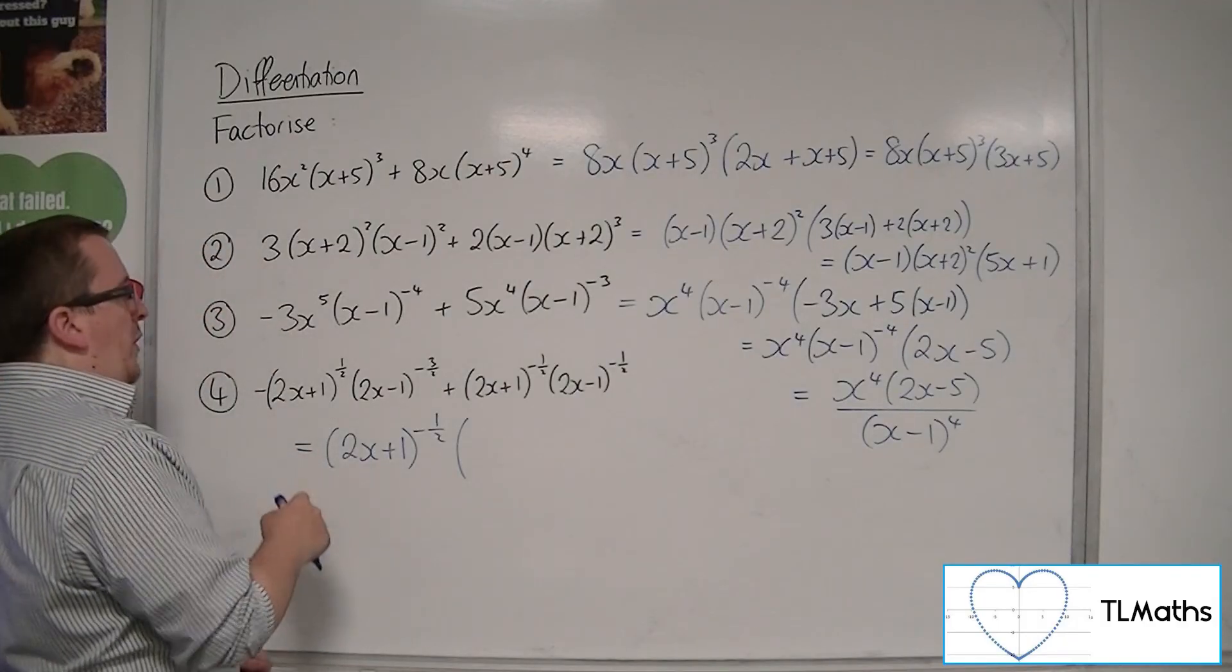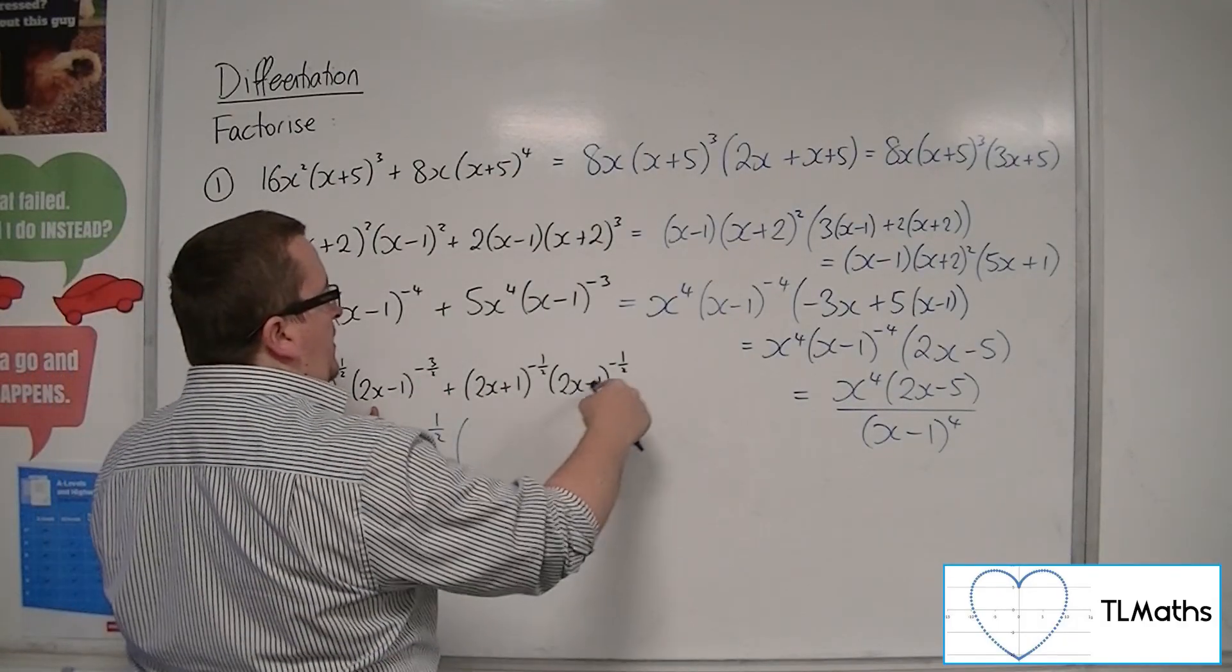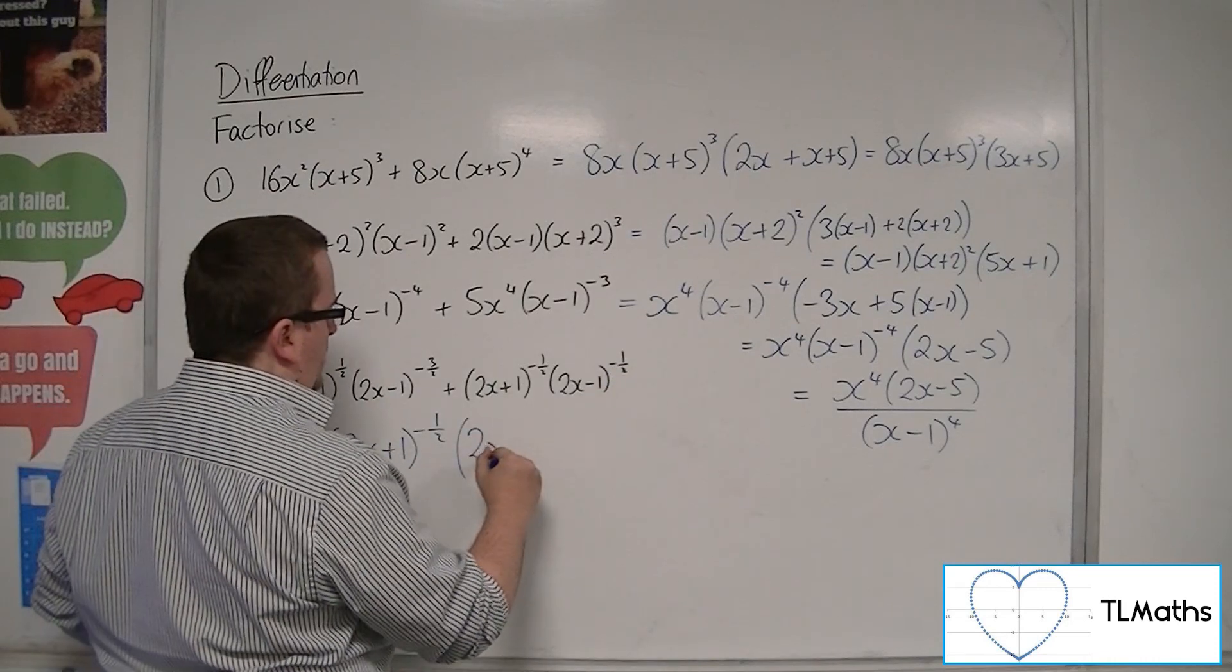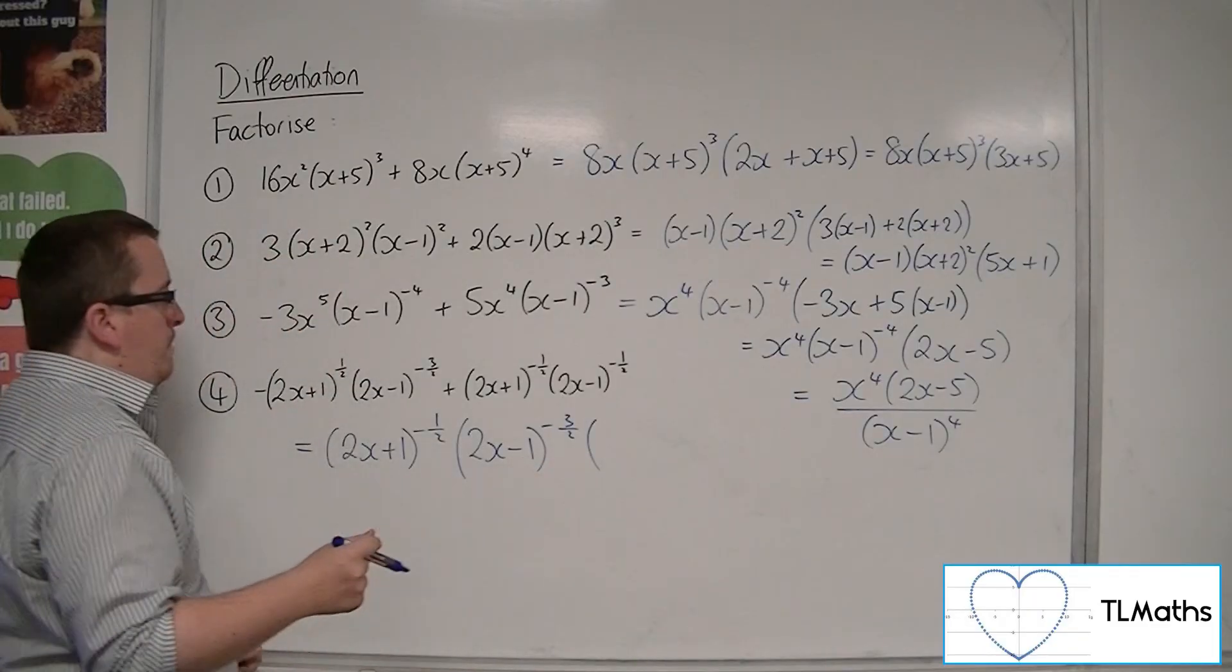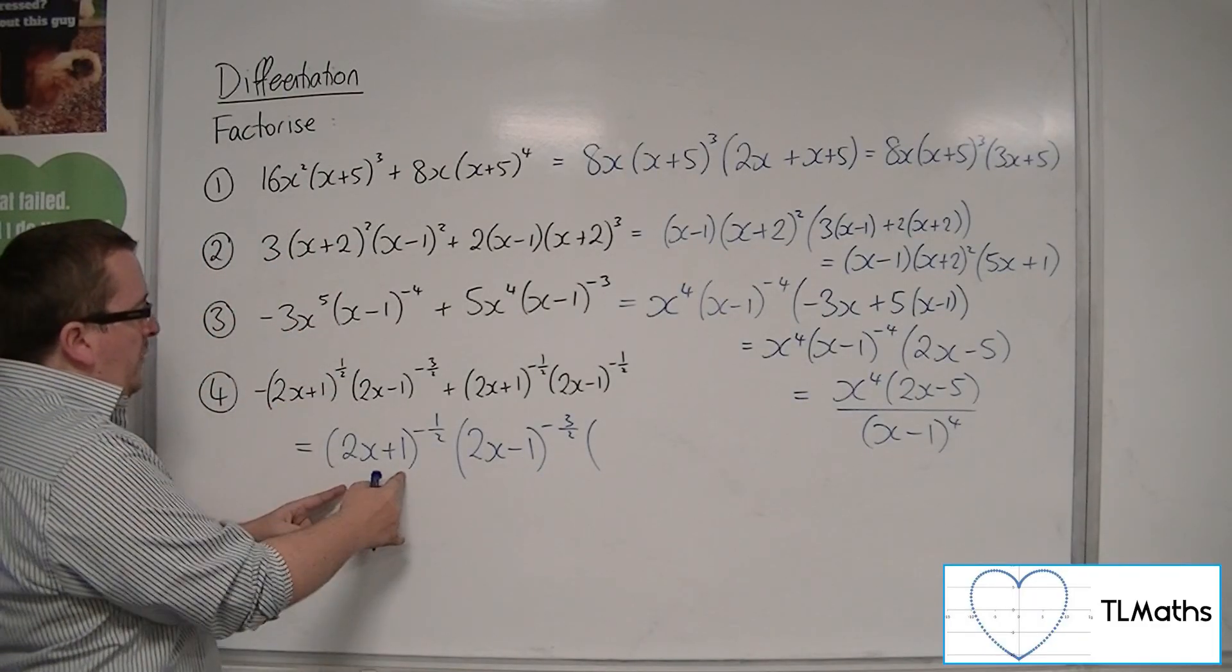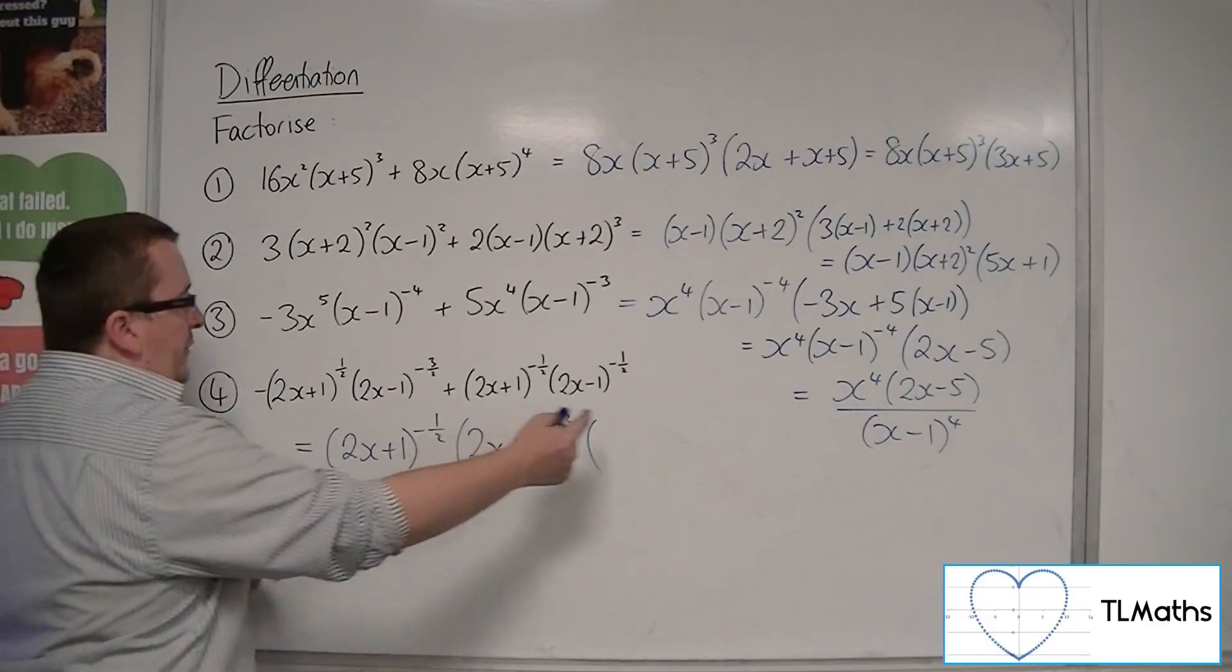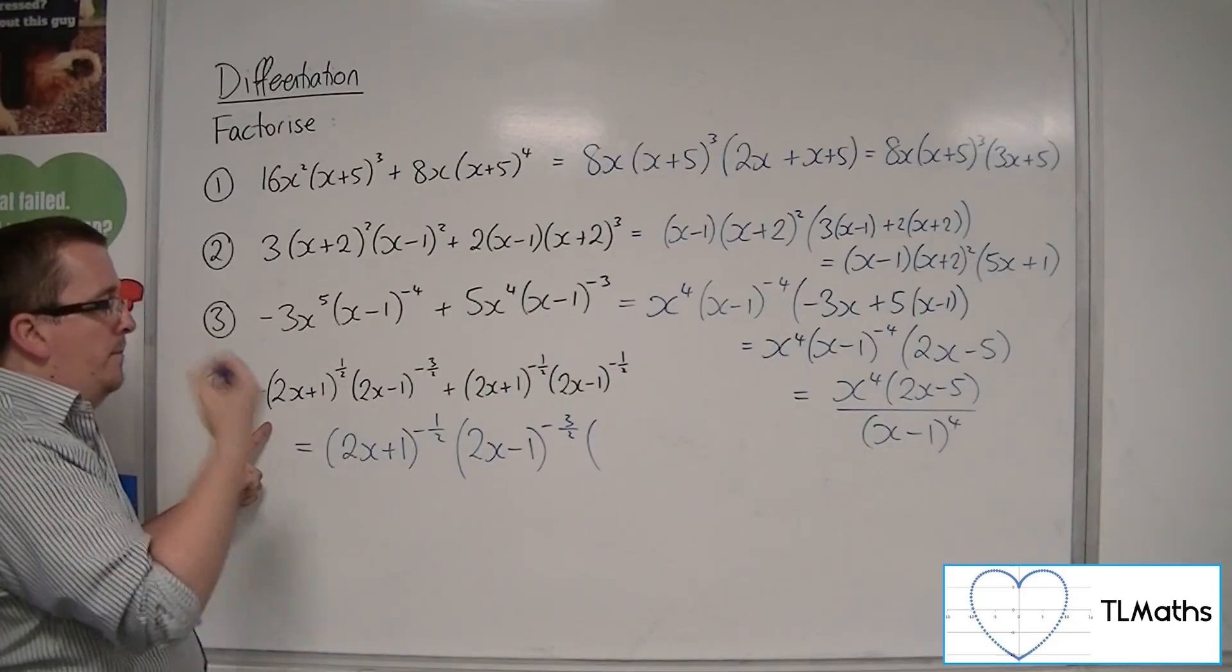And we also factor out, because we've got (2x-1)^(-3/2) and (2x-1)^(-1/2), so we're going to factor out (2x-1)^(-3/2) as well. Now what do we have left?